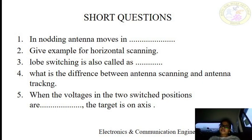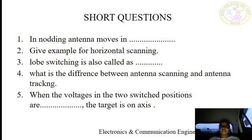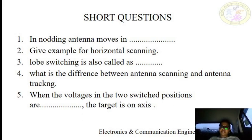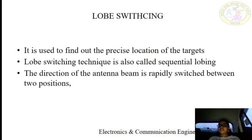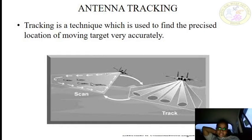Lobe switching is also called sequential lobing. A pencil-like beam is switched between two positions sequentially, so it is also called sequential lobing. The difference between antenna scanning and antenna tracking: scanning means the movement of the antenna — you get the overall picture of the area and find objects within that area. But in tracking, you get the precise location of the target.